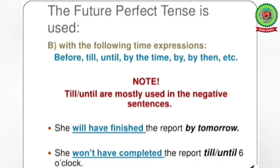Here are examples. The first example is: 'She will have finished the report by tomorrow.' Here, 'will have finished' is your future perfect tense. The second example: 'She won't have completed the report till or until 6 o'clock.' Here, 'won't have completed' is your future perfect tense.